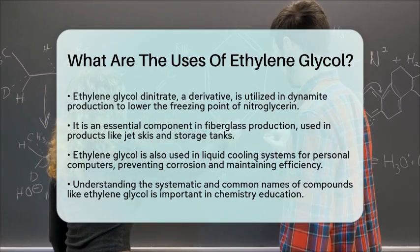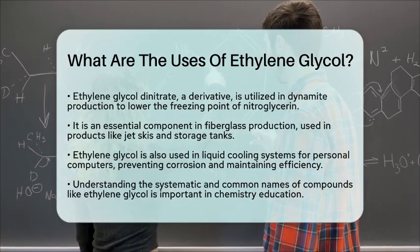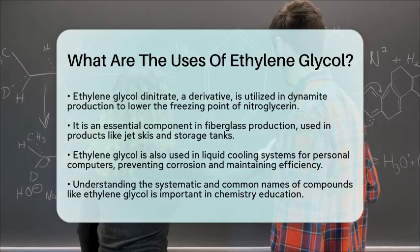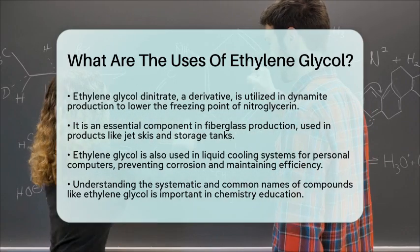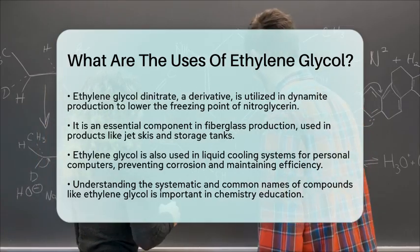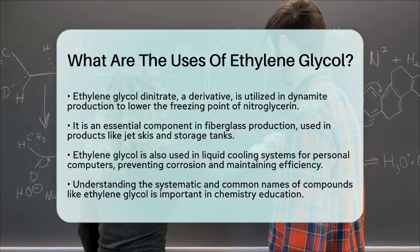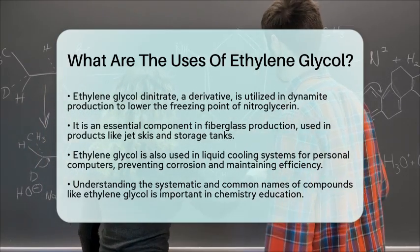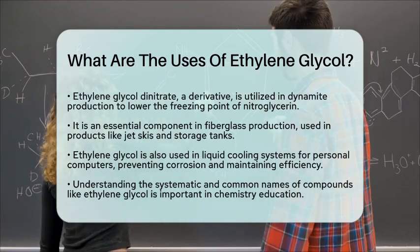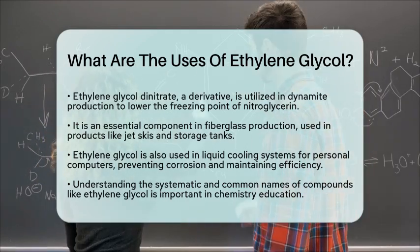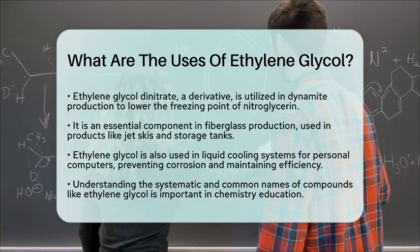When discussing chemical nomenclature, understanding the systematic and common names of compounds like ethylene glycol is important. The systematic name reflects its structure, with 'ethylene' indicating the presence of an ethylene group and 'glycol' signifying two hydroxyl groups attached to adjacent carbon atoms. This nomenclature helps identify and classify compounds based on their chemical structure, which is essential in chemistry education.